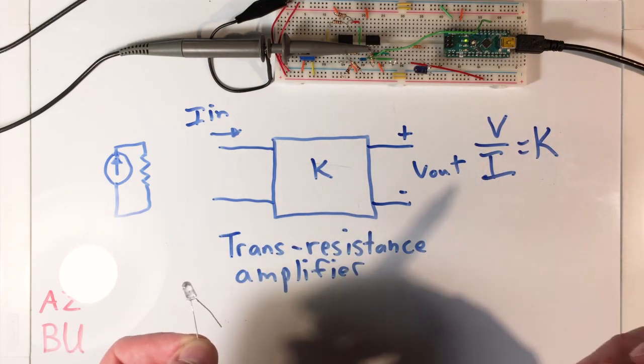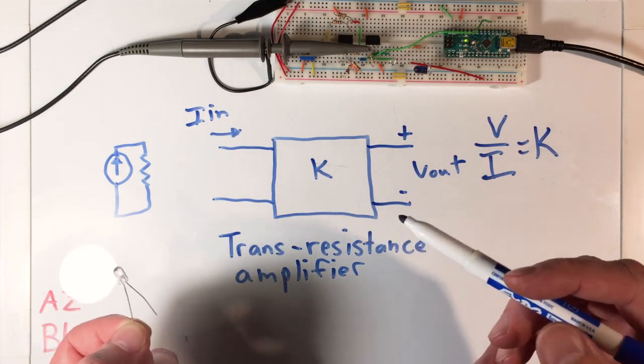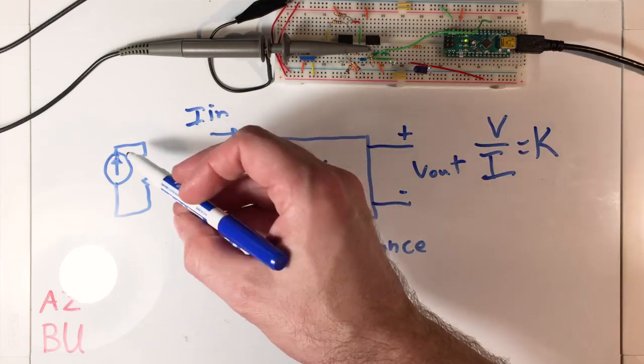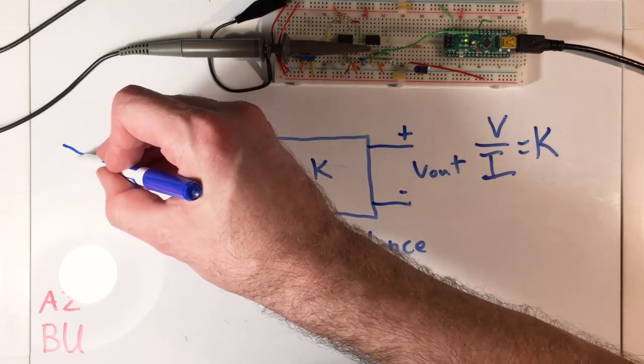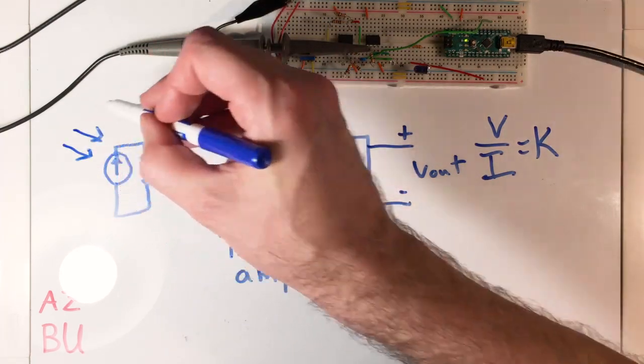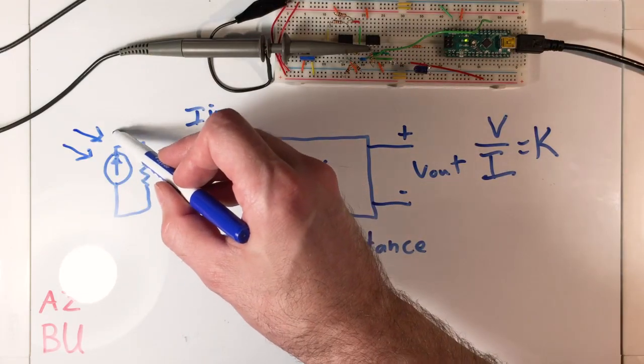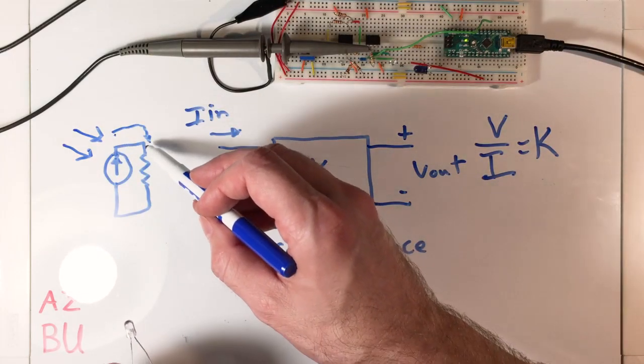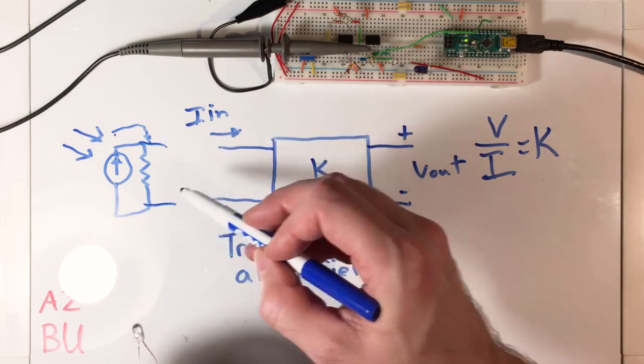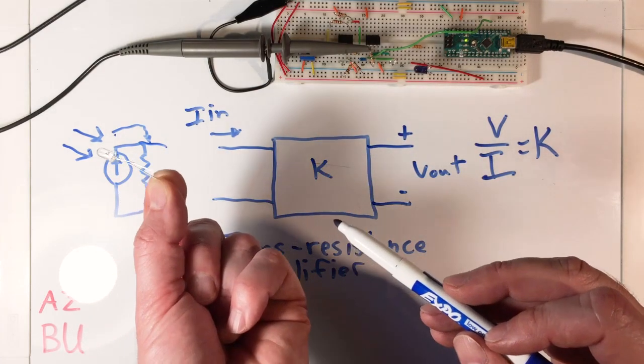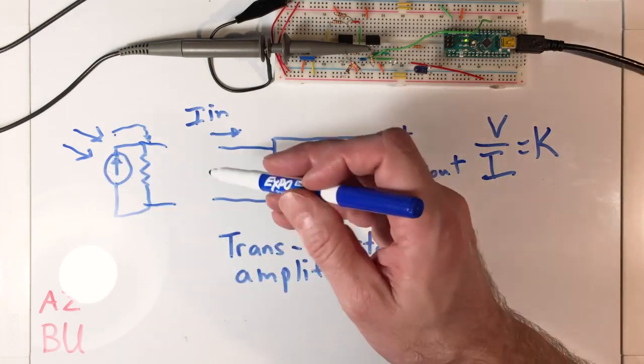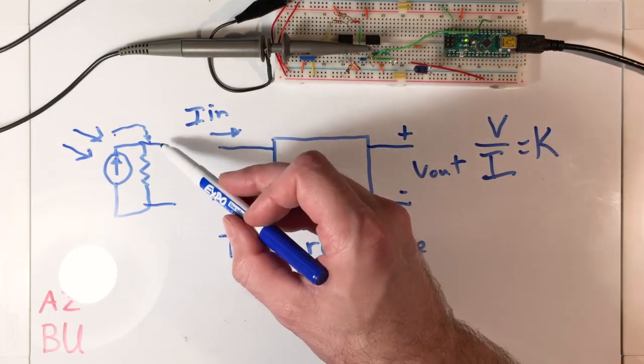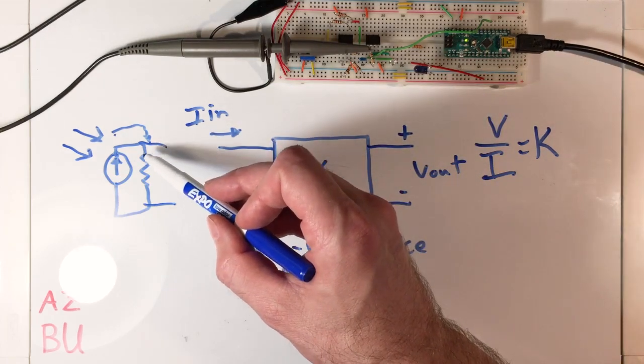So it's really best to use this as a current output type of device. We could model it as a Norton source where photons strike the device and produce a current. If we look at it, this is kind of the open circuit right there where the two leads are. If we measure the voltage across here, because no current's flowing out, voltage will build up across the Norton resistance.